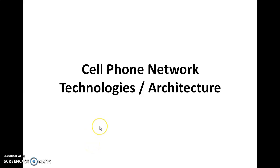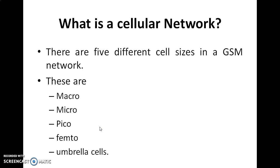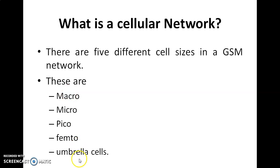In this video we are going to see about technologies, that is types — different types of cell sizes in network technologies. So what are the different cell sizes in a GSM network? We have 5: macro, micro, pico, femto, and umbrella cells. These are the 5 different types of cell sizes in a GSM network.